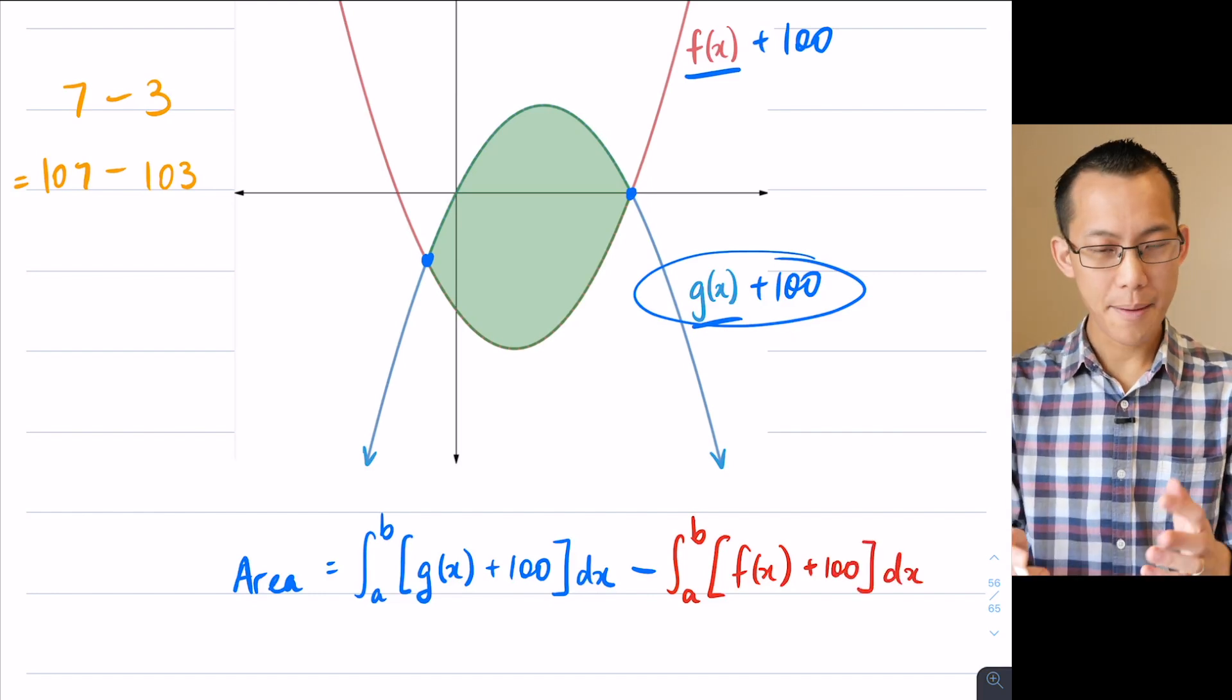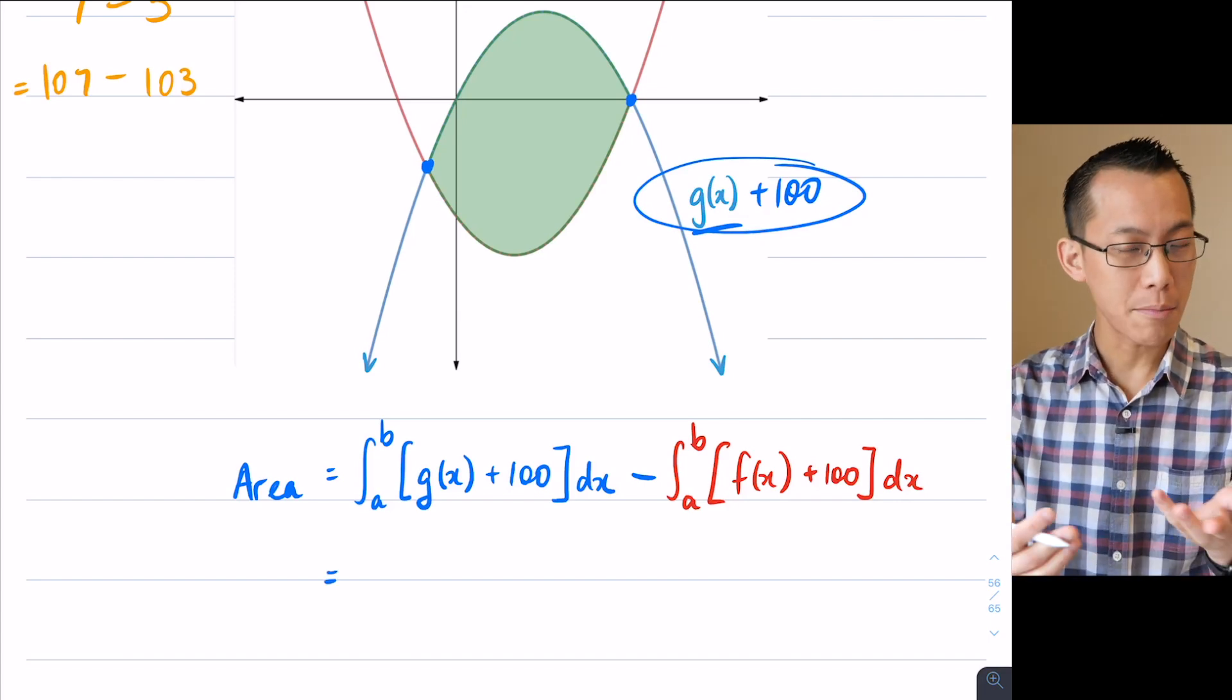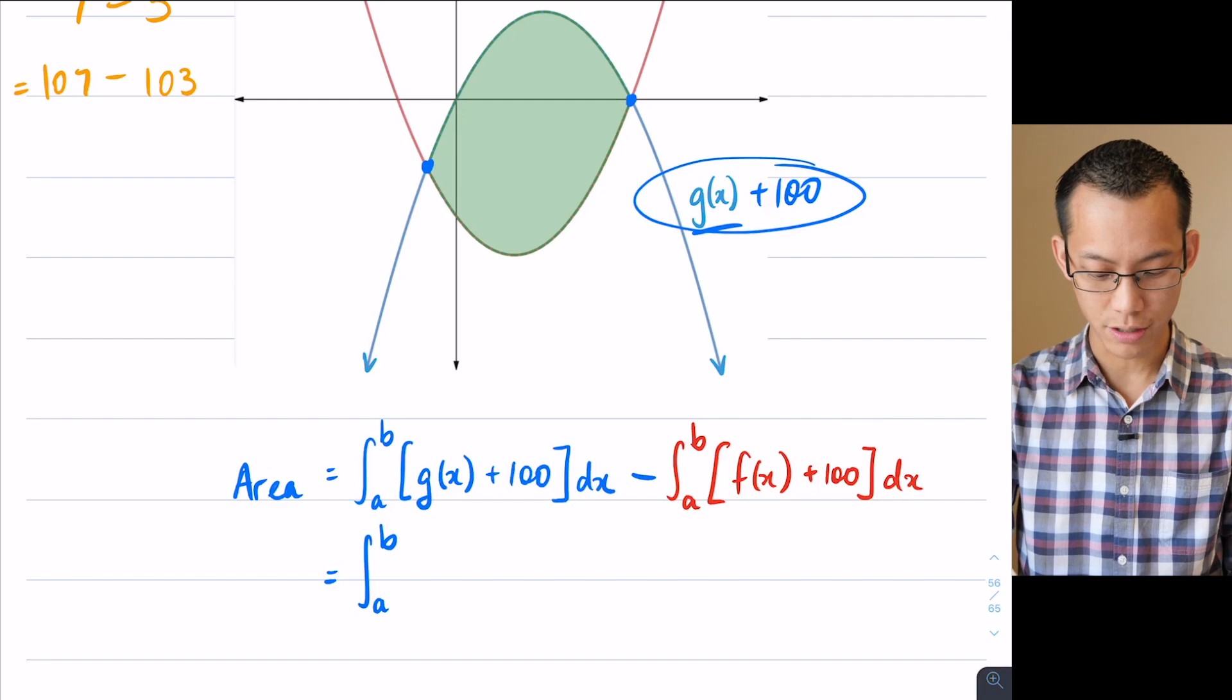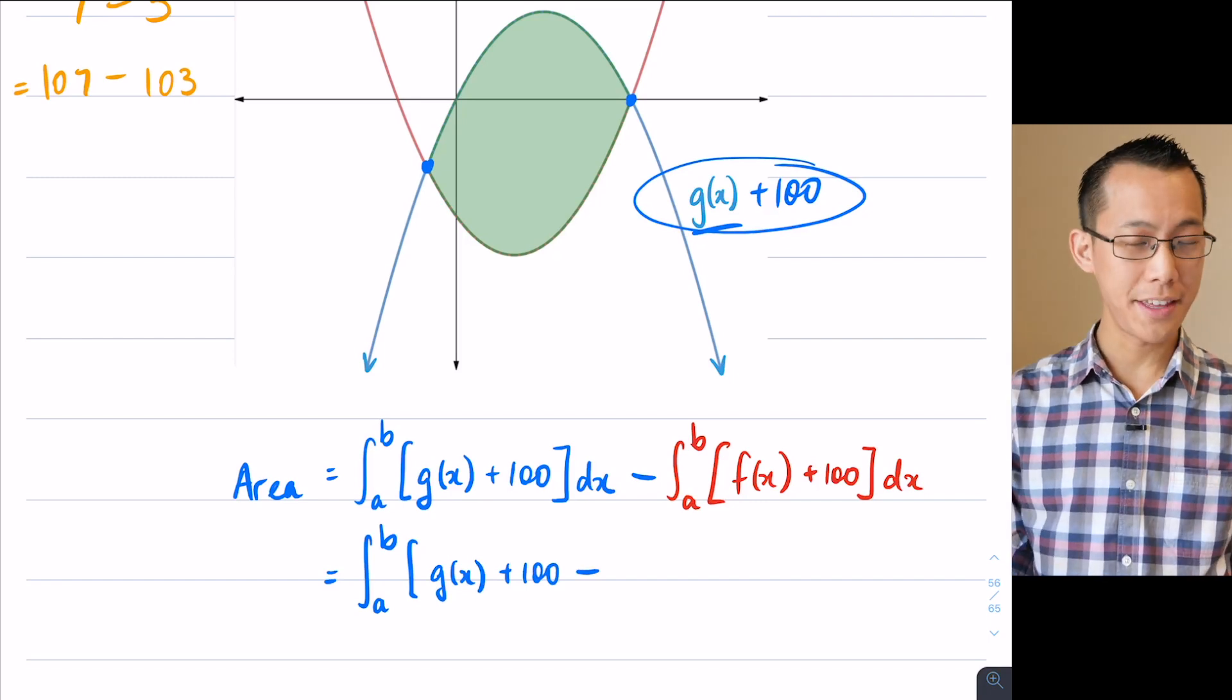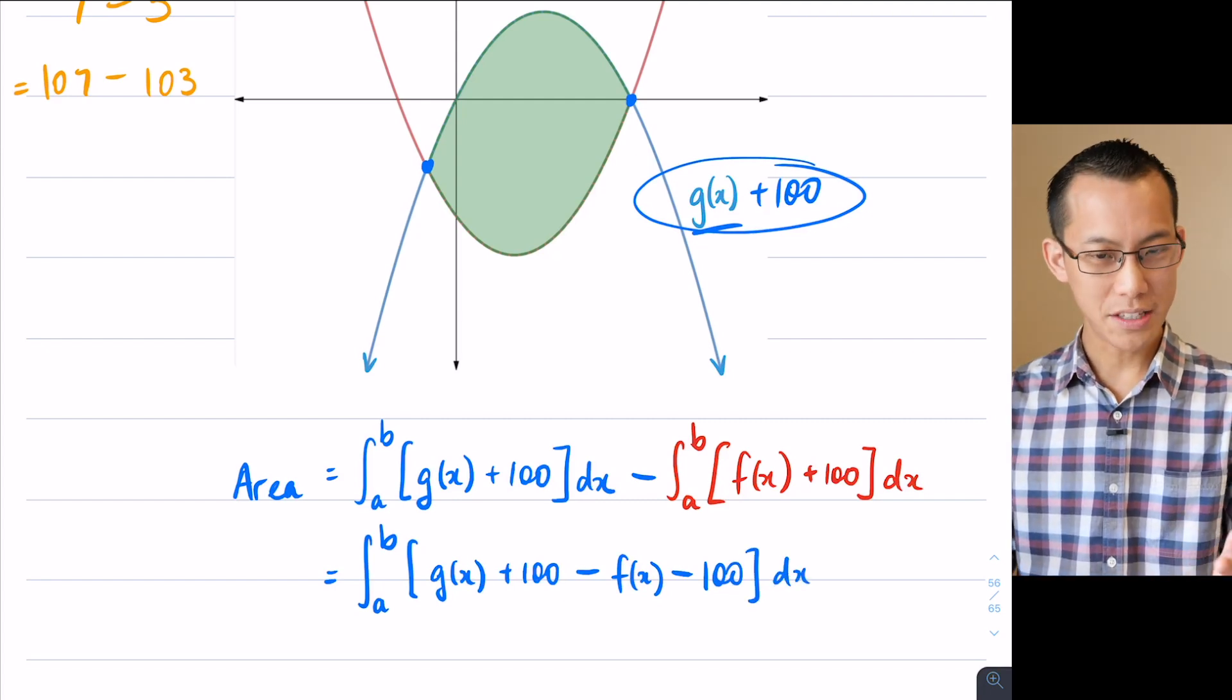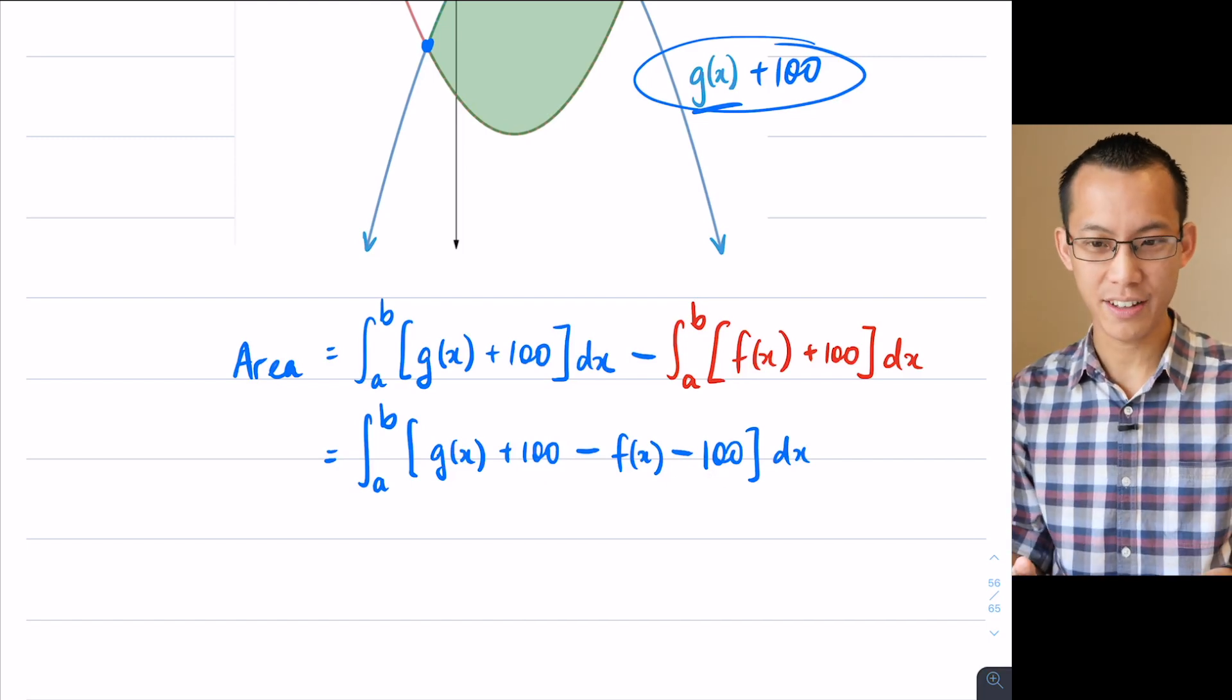Now what happens when I try and simplify this thing? Well, just like before, I'm going to try and reduce these multiple integrals into a single integral. So because I noticed again, my boundaries are the same from a to B, I can just take the two integrals and I'm going to just do a straight subtraction. So I'm going to get G of X plus a hundred. And then I'm going to subtract everything that I saw in the red integral, which is, I've got an F of X and I've also got a 100, but I'm going to subtract that. Hopefully at this point, you can see what's happening. Even though I had to add a hundred to both to move them both up into positive territory, you can see that I've got this plus 100 and this minus 100. So they're exactly canceling.